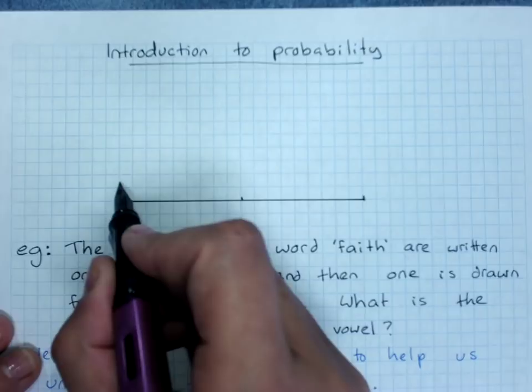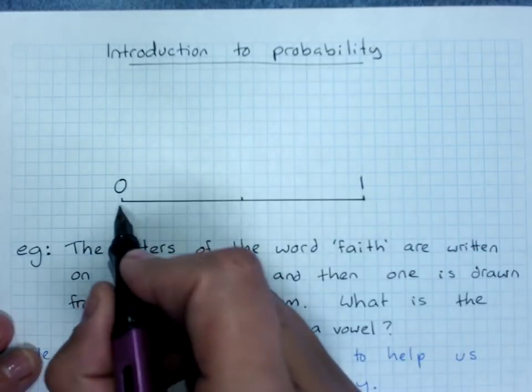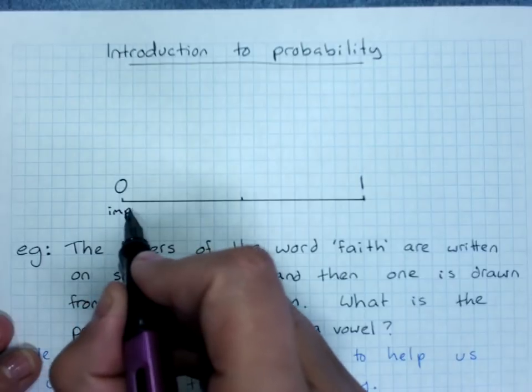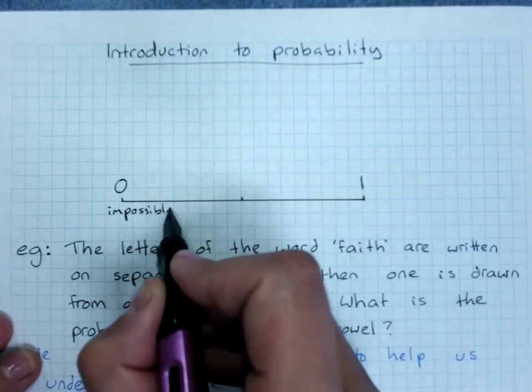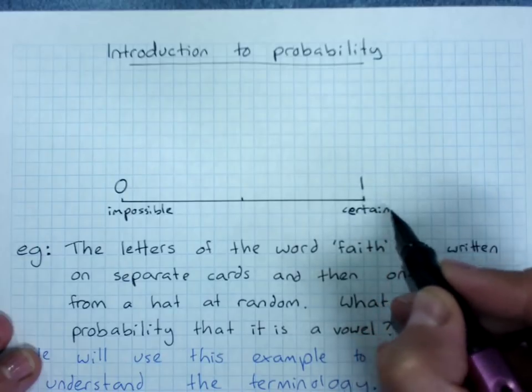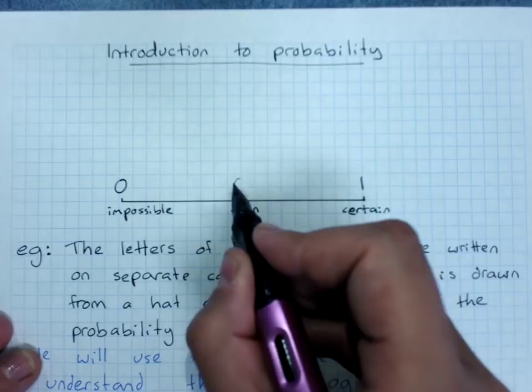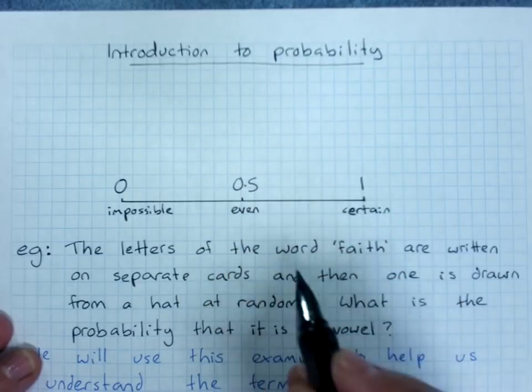Probability is a number between zero and one, where zero is impossible and one is absolutely definitely going to happen, and halfway between at 0.5 it's an even chance.